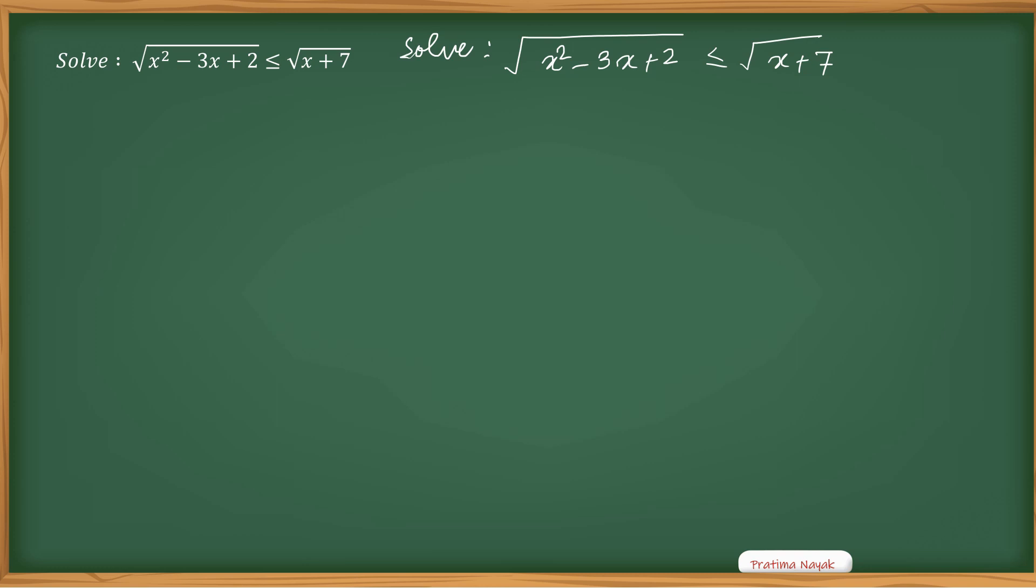So here we will learn two things. One is when square root function is defined. The square root function is defined if x is greater than or equal to 0. So this will be applicable to both left and right hand sides.